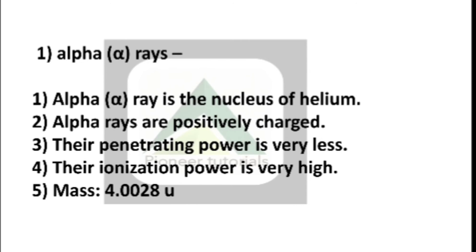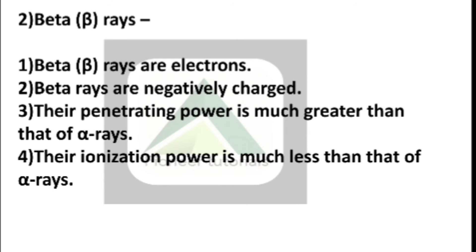Next is beta rays. Beta rays are electrons. Beta rays are negatively charged. Their penetrating power is much greater than that of alpha rays. Their ionization power is much less than that of alpha rays.